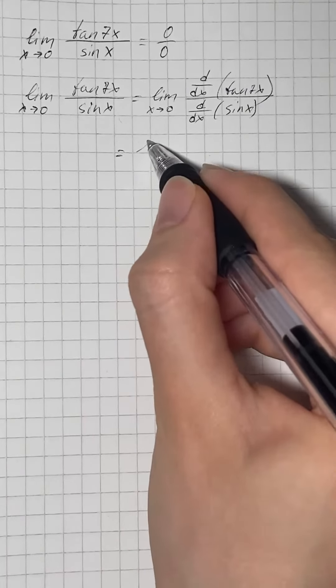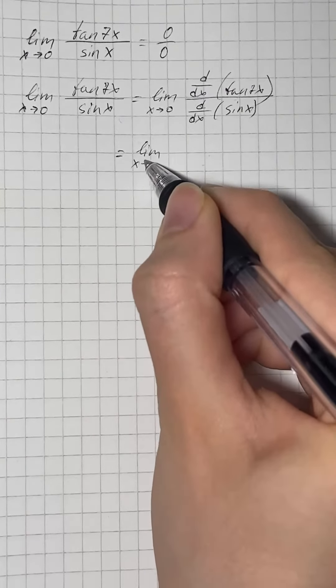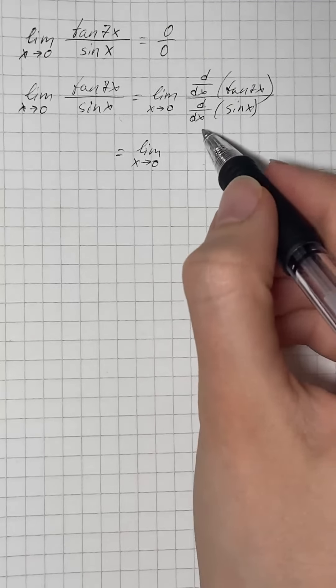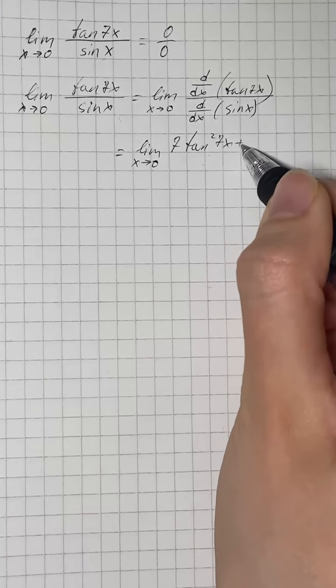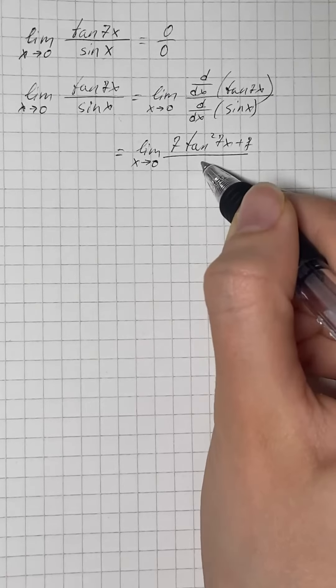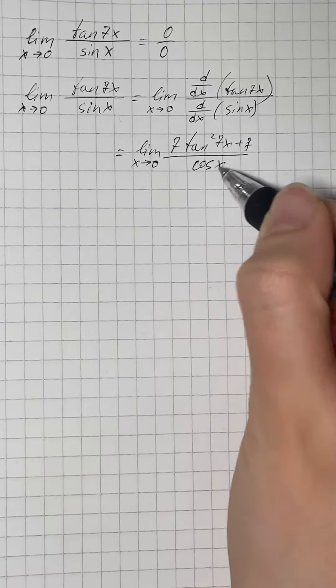That equals limit as x approaches 0 of 7 tangent squared of 7x plus 7 over cos of x.